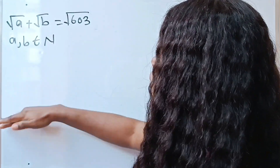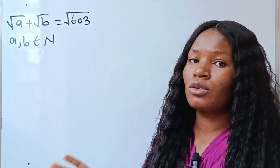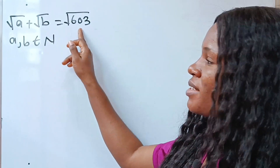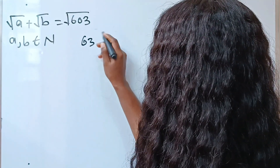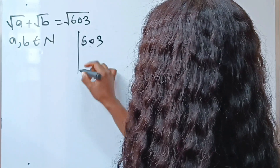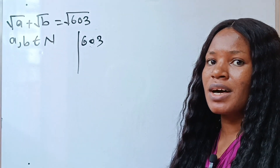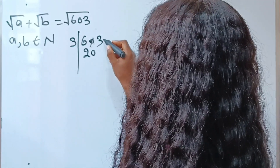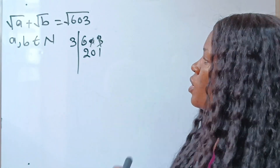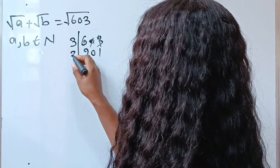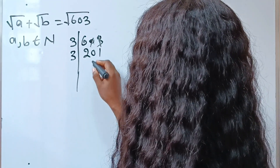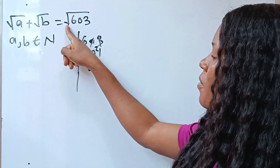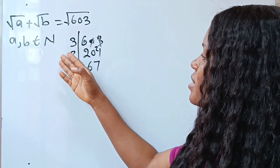Let's quickly solve for the value of a and b, which are natural numbers. Let's factorize 603. Six plus three gives us nine, so three can divide this. When three divides 603: 6÷3=2, 0÷3=0, 3÷3=1, giving 201. Since 2+1=3, three can divide again. When three divides 201 we get 67, so √603 = √(3×3×67).